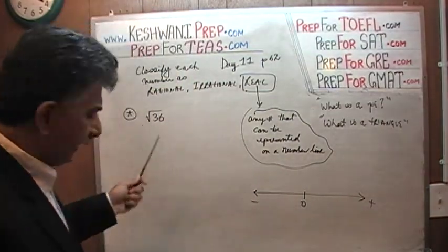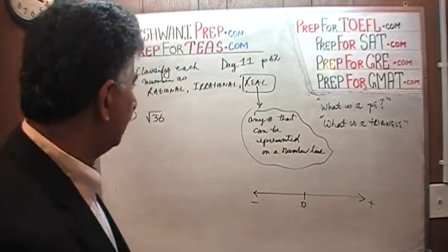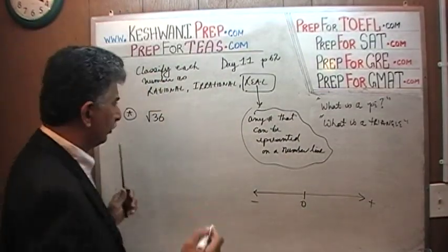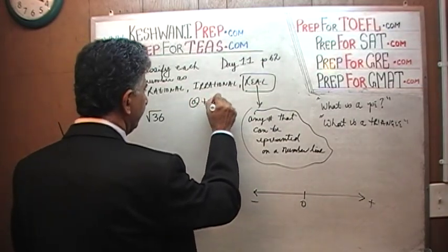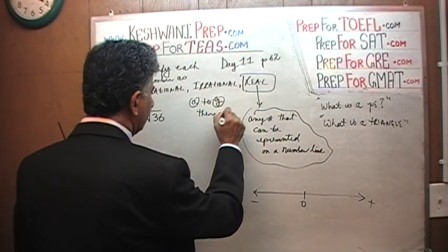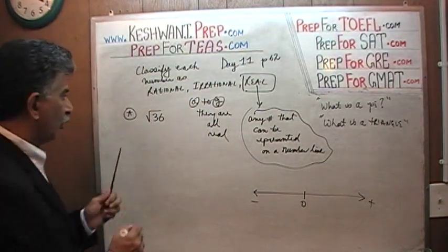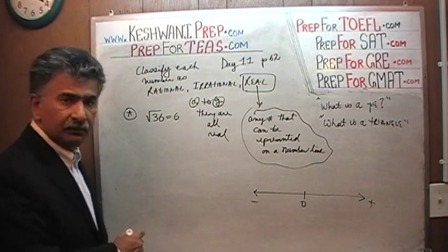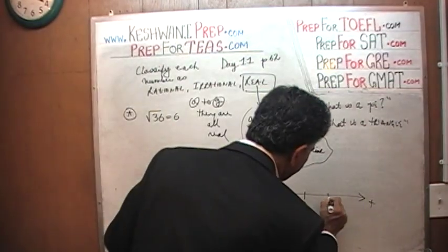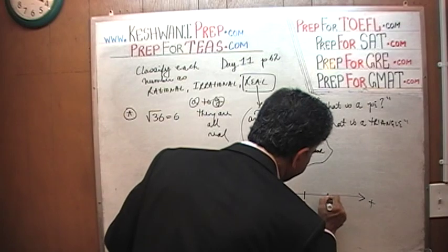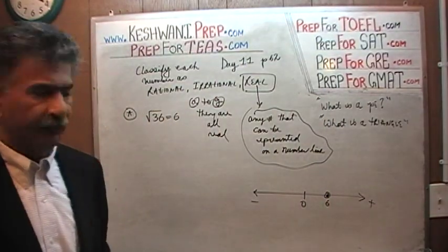Every answer, A through G — however many they give you — they are all real, as we will see in a second. The root of 36 is 6. Well, we can represent 6 on the number line. In other words, 6 exists on our number line. It's a real number.